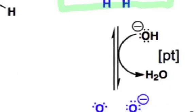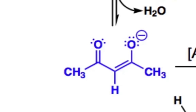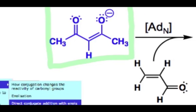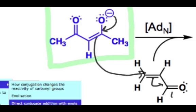Upon deprotonation with a base, this forms a stabilized enolate. I would invite you to pause the video now and see if you can draw a resonance structure of this enolate, which shows why it's stabilized more than a typical unstabilized enolate would be. At this point, this stabilized enolate can add in at the beta position of the alpha-beta unsaturated ketone, and this forms yet another enolate.